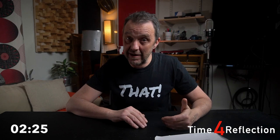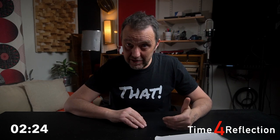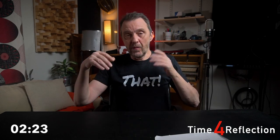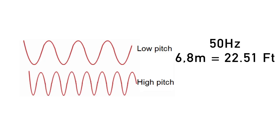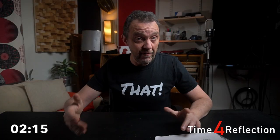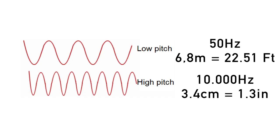Compared to this 10,000 Hertz sine wave — 10,000 cycles per second. The wavelength of a 50 Hertz cycle is about 6.8 meters, or 22 feet. The wavelength of a 10,000 Hertz cycle is about 3.4 centimeters, or just over one inch.